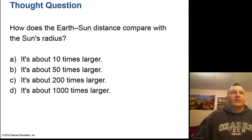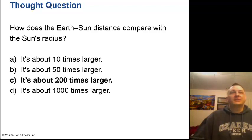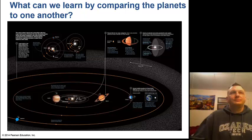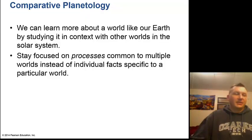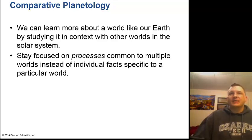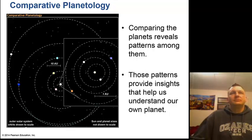Here's a question: how does the Earth-Sun distance compare with the Sun's radius? It's about 200 times larger. Comparative planetology is how we compare the planets — we can learn more about Earth by studying it in context with other worlds. We stay focused on processes common to multiple worlds instead of individual facts specific to particular worlds, comparing Earth to all the other planets and back to Earth. Comparing the planets reveals patterns that provide insights into our own planet.